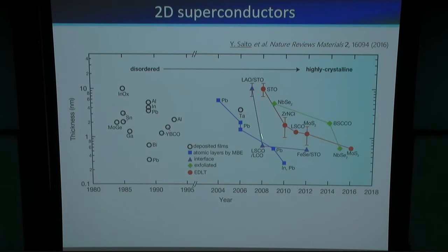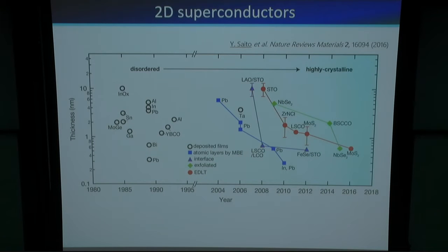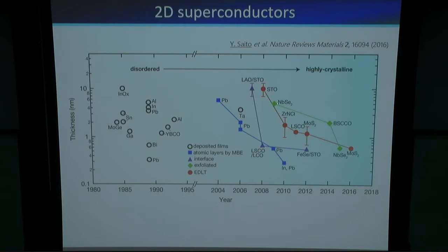These 2D superconductors are followed by interface superconductors. The LAO-STO is the very first oxide interface superconductor, followed by other oxide thin films. Nowadays, people are excited about monolayer iron selenide on top of strontium titanate. We are working on gate-induced superconductivity starting with strontium titanate, and nowadays also on zirconium nitride chloride and MoS₂. People are also making monolayer films by mechanical exfoliation — like graphene — on niobium diselenide. These are representative superconductors with very high crystallinity.